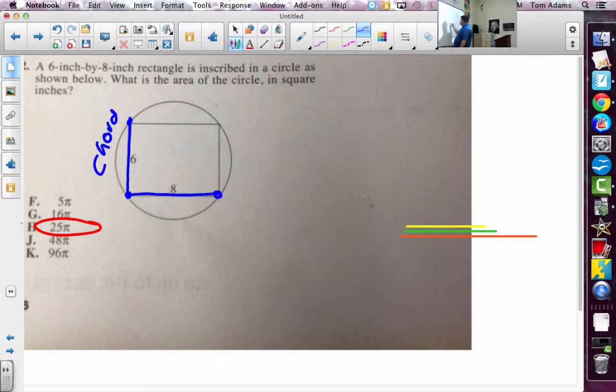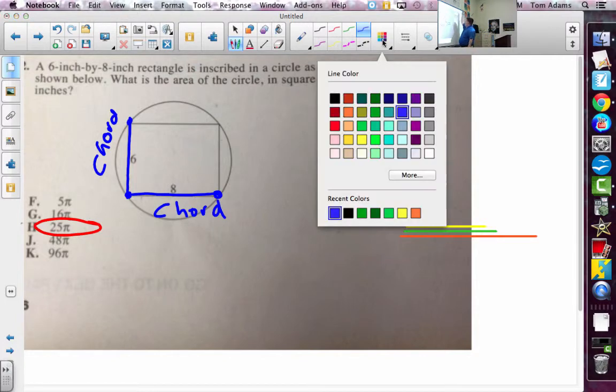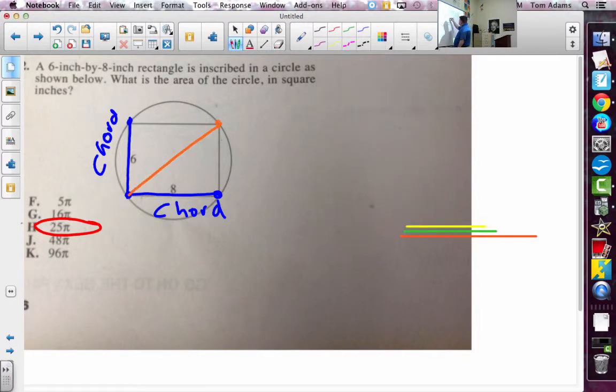And by definition, a chord is really just a line that goes from one side of the circle to the other. But the diameter is a very special chord because the diameter goes through the center. And because the rectangle is inscribed on the circle, right,